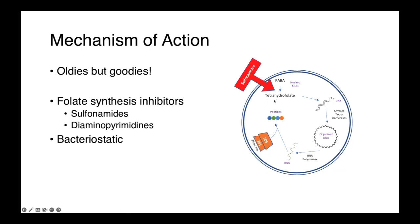through to tetrahydrofolate, and this can be done by two drugs within this broad family: the sulfonamides and the diaminopyrimidines. These drugs are bacteriostatic, so they don't kill the organisms, but they simply arrest their growth.